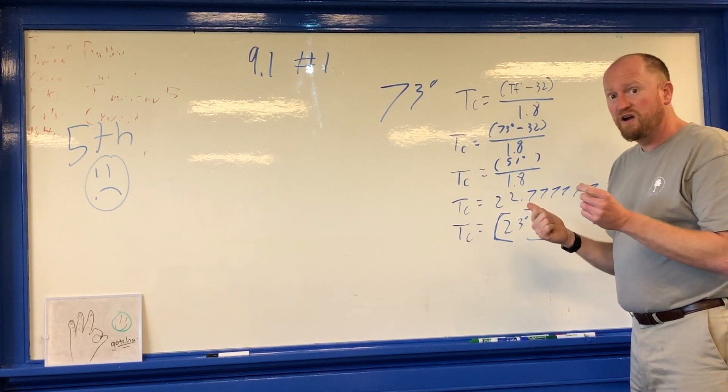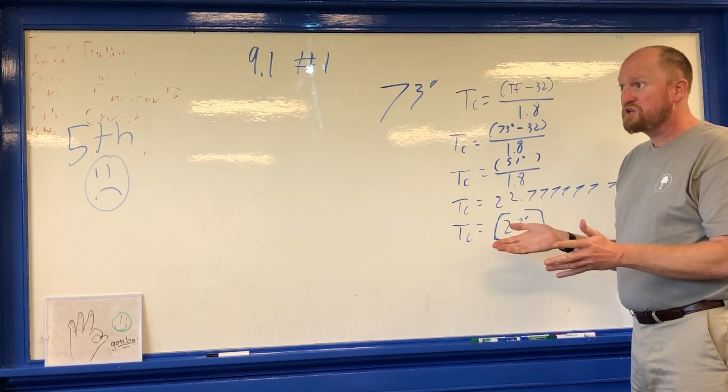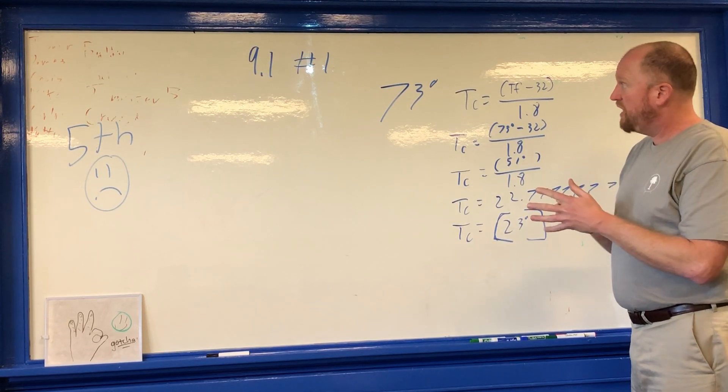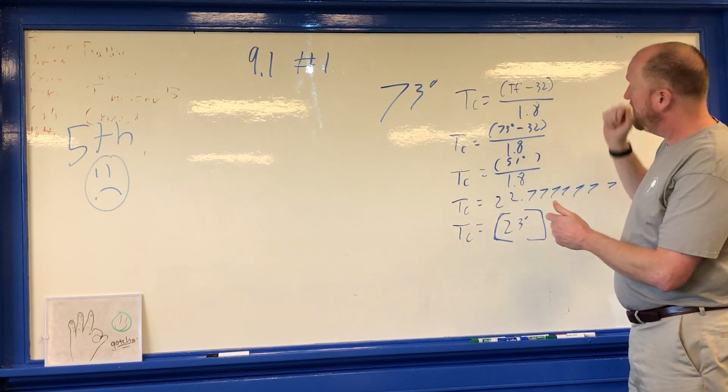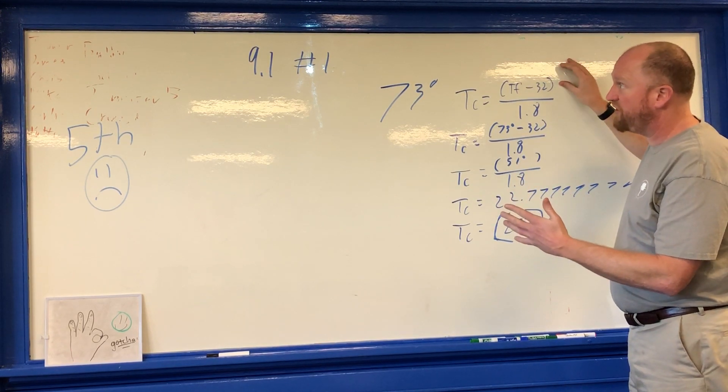Degrees Celsius are bigger, so you generally tend to get smaller numbers. Also, think about the fact that freezing, you're starting with a bigger number in Fahrenheit. Just even as starting at freezing, you have a bigger number in Fahrenheit.